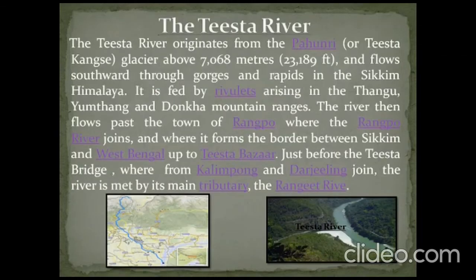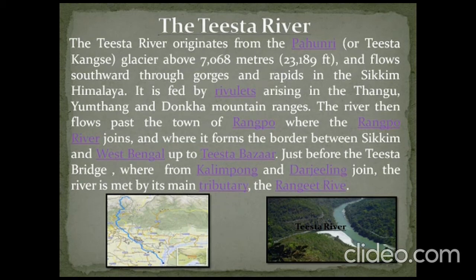The Teesta River originates from the Pahuri glacier above 7,600 meters. It flows southward through gorges and rapids in the Sikkim Himalayas, and is fed by streams arising in the Thangu, Yamthang, and Dongkha mountain ranges. The river then flows past the town of Rangpo where the Rangpo River joins, forming the border between Sikkim and West Bengal up to Teesta Bazaar.